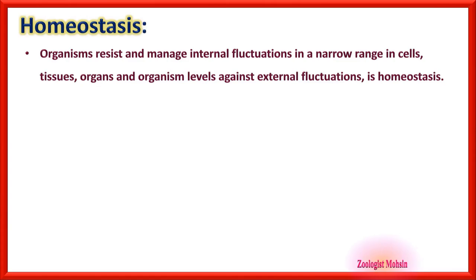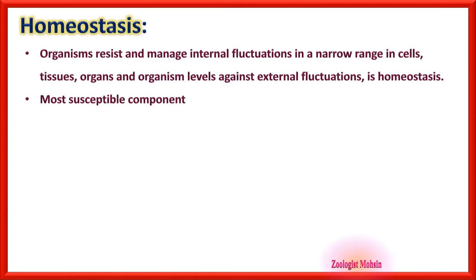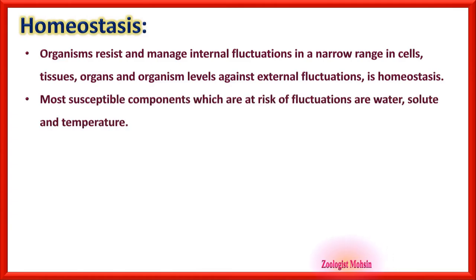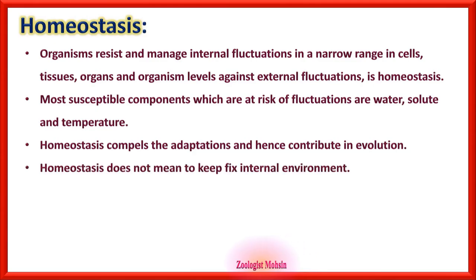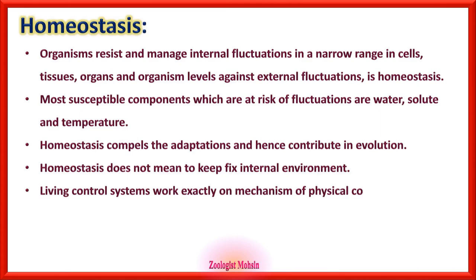Homeostasis: organisms resist and manage internal fluctuations in a narrow range at cells, tissues, organs, and organism levels against external fluctuations or changes. The key word here is 'narrow range.' The most susceptible components at risk are water, solute, and temperature. Homeostasis compels adaptations and contributes to evolution, and does not mean keeping a fixed internal environment but within a narrow range.